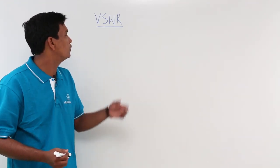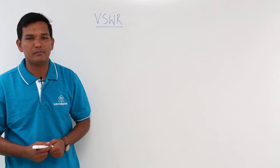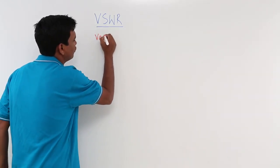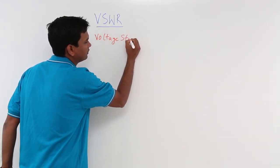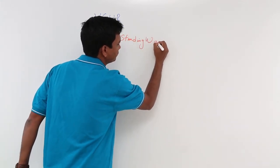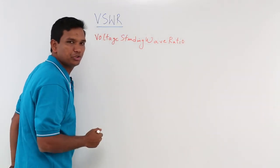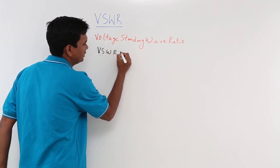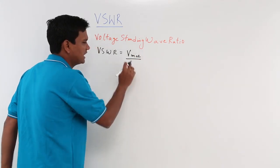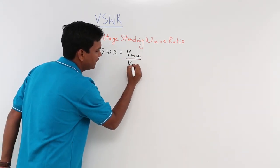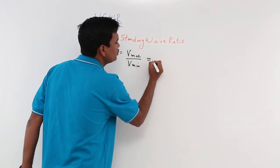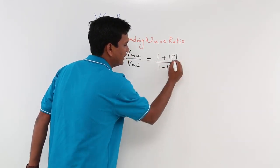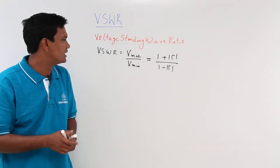In this class, we will discuss VSWR, which stands for Voltage Standing Wave Ratio. VSWR is a ratio — specifically, it is the ratio of Vmax, the maximum voltage on the transmission line, to Vmin, the minimum voltage on the transmission line. This is also equal to (1 + |τ|) / (1 − |τ|), where τ is the reflection coefficient.